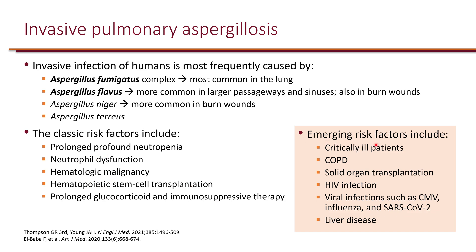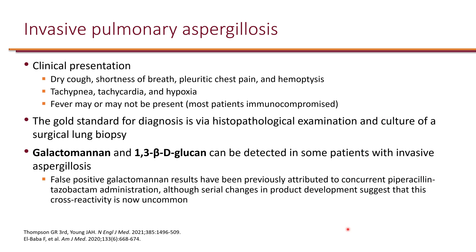Emerging risk factors include critically ill patients or anyone in the ICU, COPD, solid organ transplantation, HIV infection, and viral co-infection such as CMV, influenza, and most recently SARS-CoV-2, and of course liver disease. Symptoms of pulmonary aspergillosis include dry cough, shortness of breath, chest pain, and hemoptysis. Patients can be pretty ill with tachypnea, tachycardia, and hypoxia.